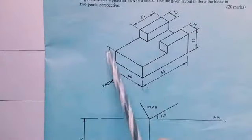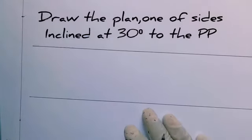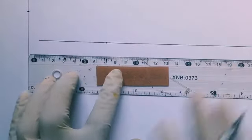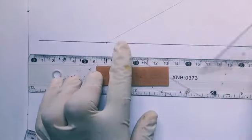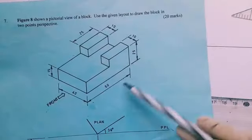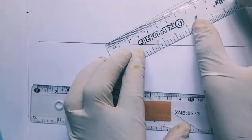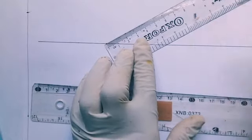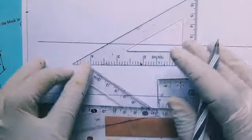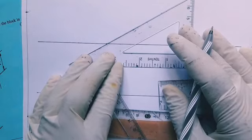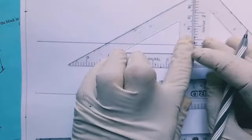Next we need to draw our plan for this shaped block. The plan is such that one side is inclined to the picture plane at 30 degrees. We first identify the edge where the plan will meet the picture plane, then draw our 30-degree line on which we transfer measurements for our plan. This is 60 millimeters — we transfer it here for the longest side. To complete it, we draw perpendicular lines to the edges.